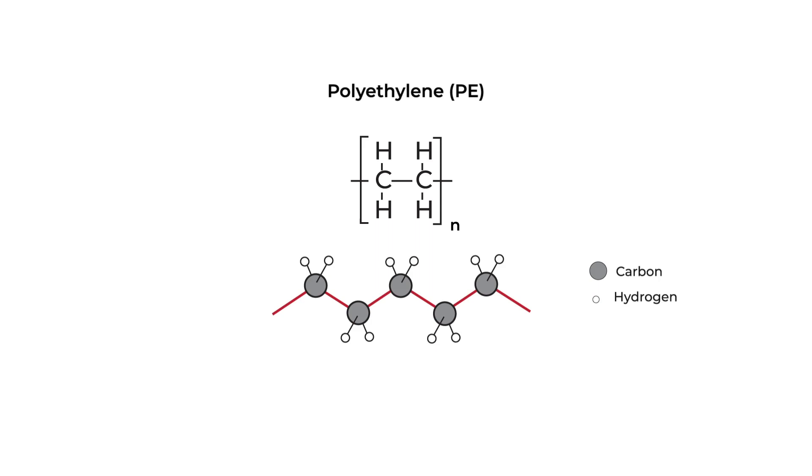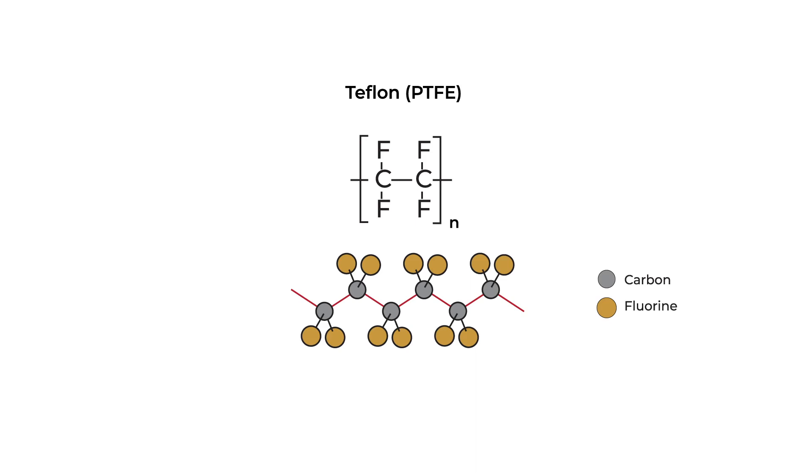We said we can change our side groups. We also talked about Teflon in our introduction. We can see the structure and its repeating units here. We've swapped our hydrogens for fluorines. For both polyethylene and Teflon, the repeating unit has two carbons, both with the same side groups.